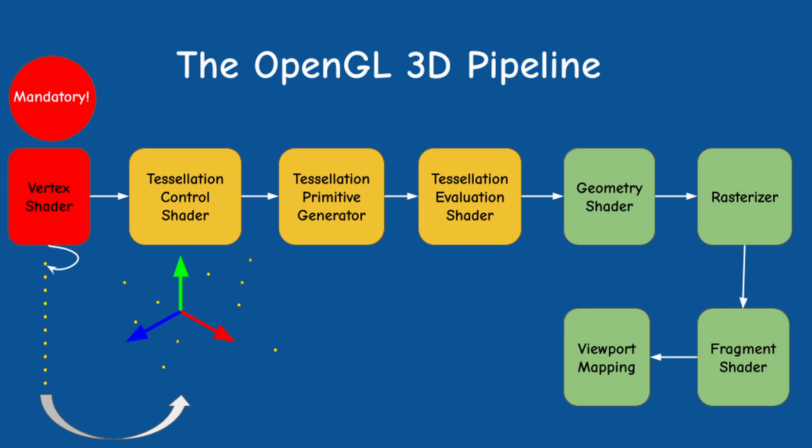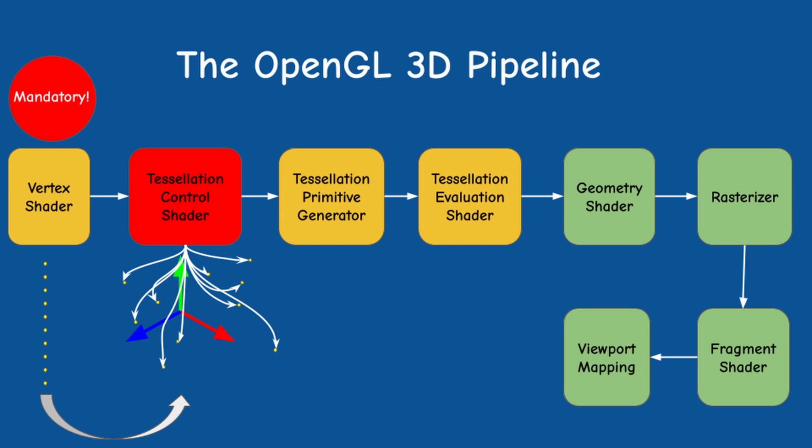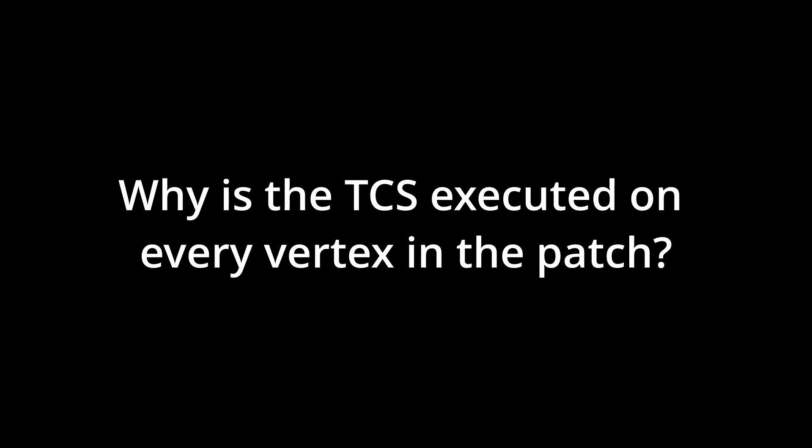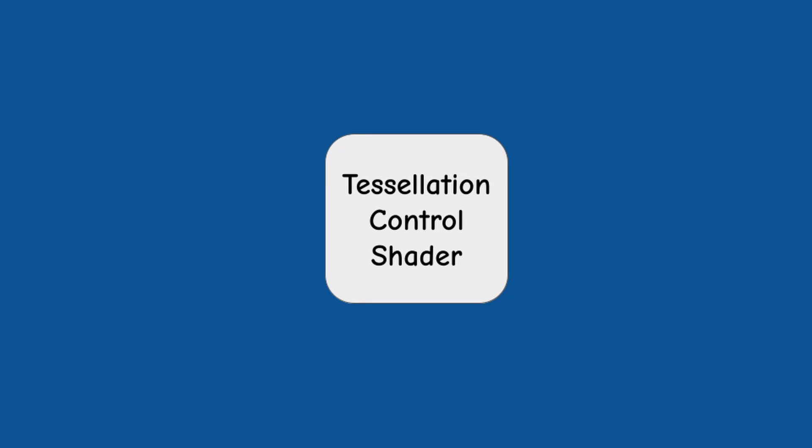The difference is that while the VS has access to the attributes of the current vertex only, each invocation of the TCS can access the attributes of all the vertices in the patch. So if the main job of the TCS is to set the tessellation levels and there's only one such set, you may be asking yourself why is the TCS executed on every vertex in the patch. The reason is that the TCS can also modify the input vertices and even change the number of vertices in the output patch.